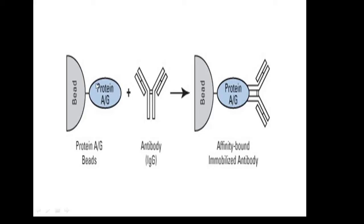As mentioned, antibodies are usually immobilized on a magnetic bead covered with protein A or G, which are present on the surface of the bead. Both protein A and protein G have a very high affinity for the Fc region of the antibody. As a result, the antibody Fc region binds to protein A or G on the bead surface, while the free Fab region will bind to our protein of interest in solution.